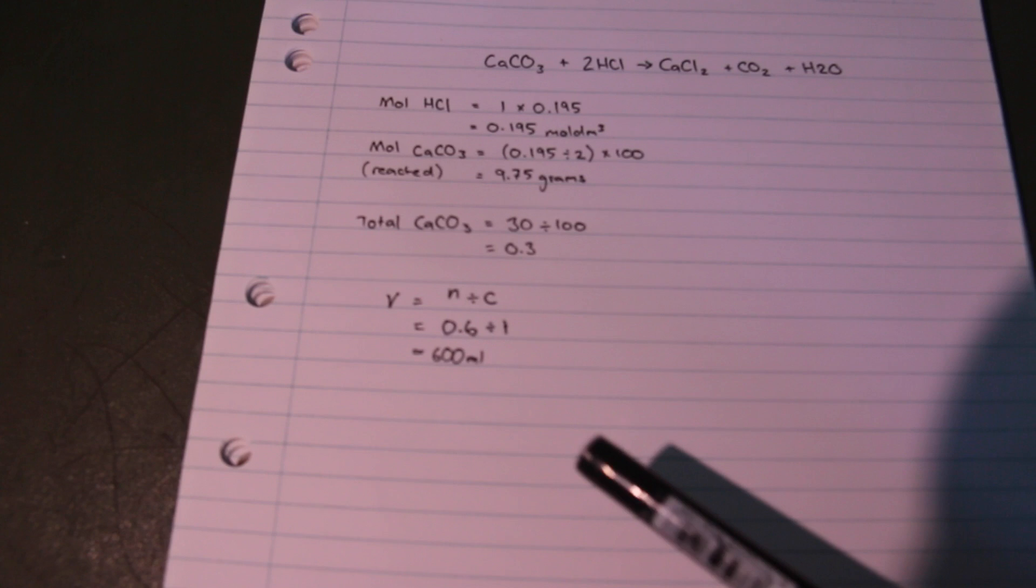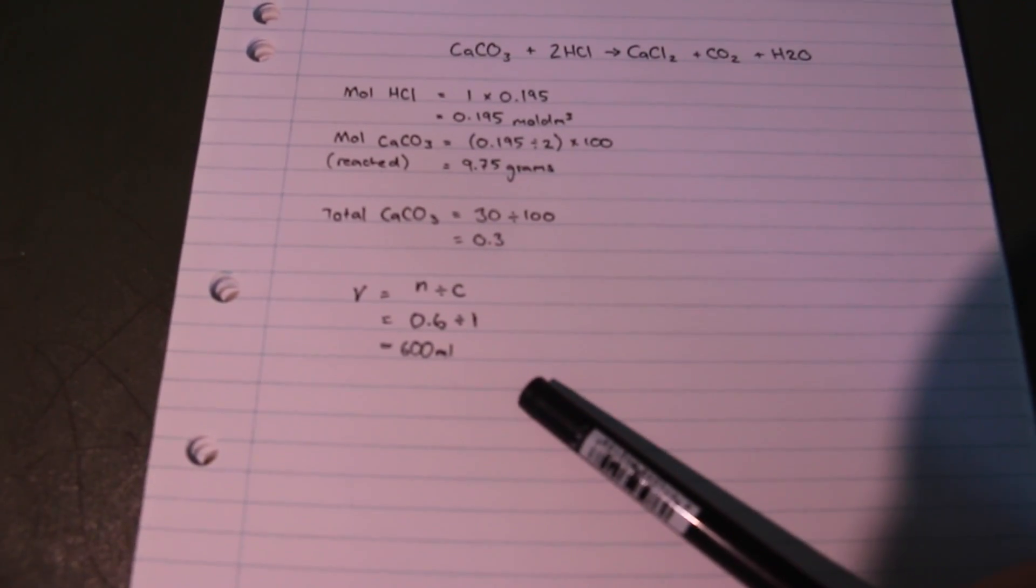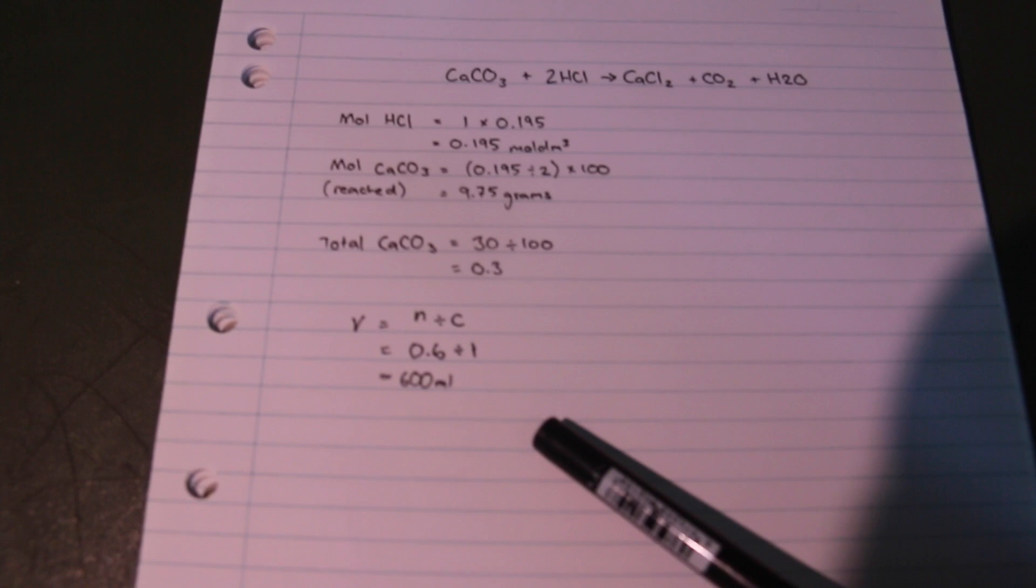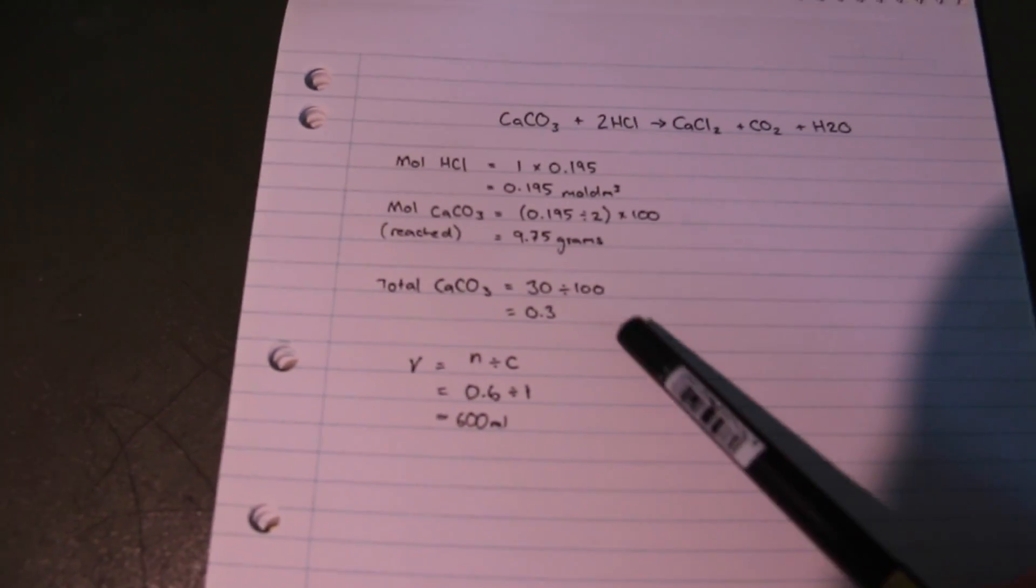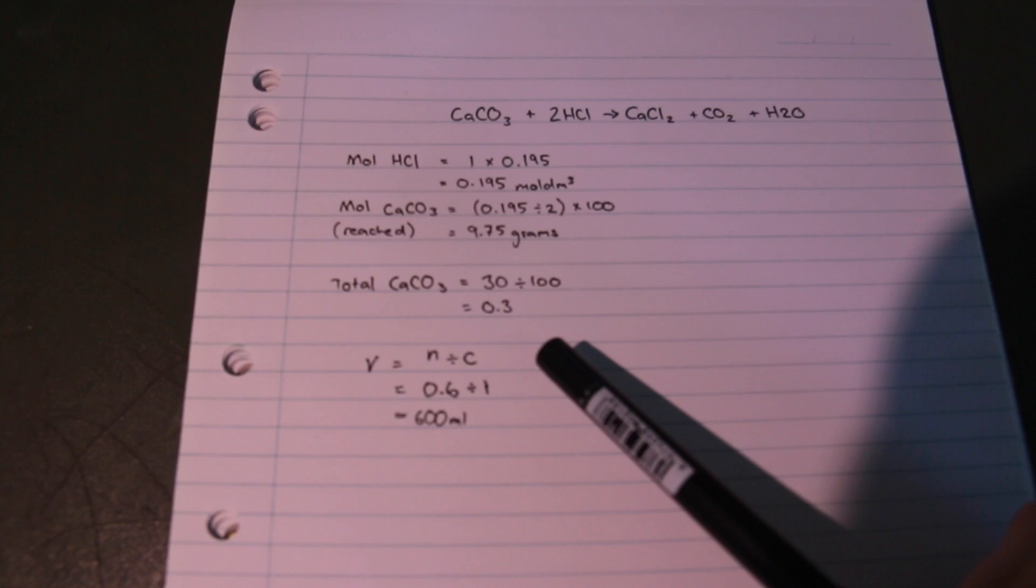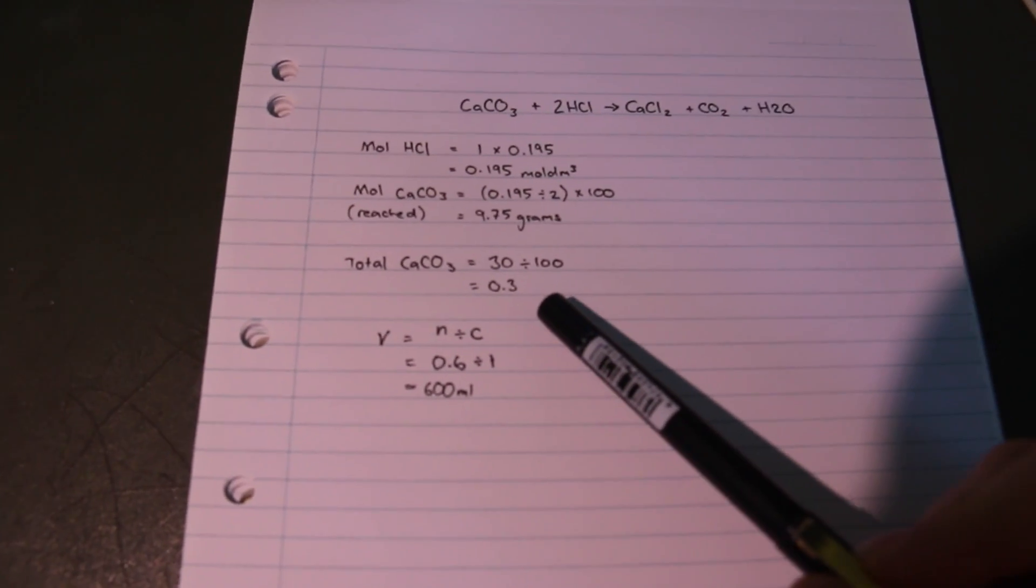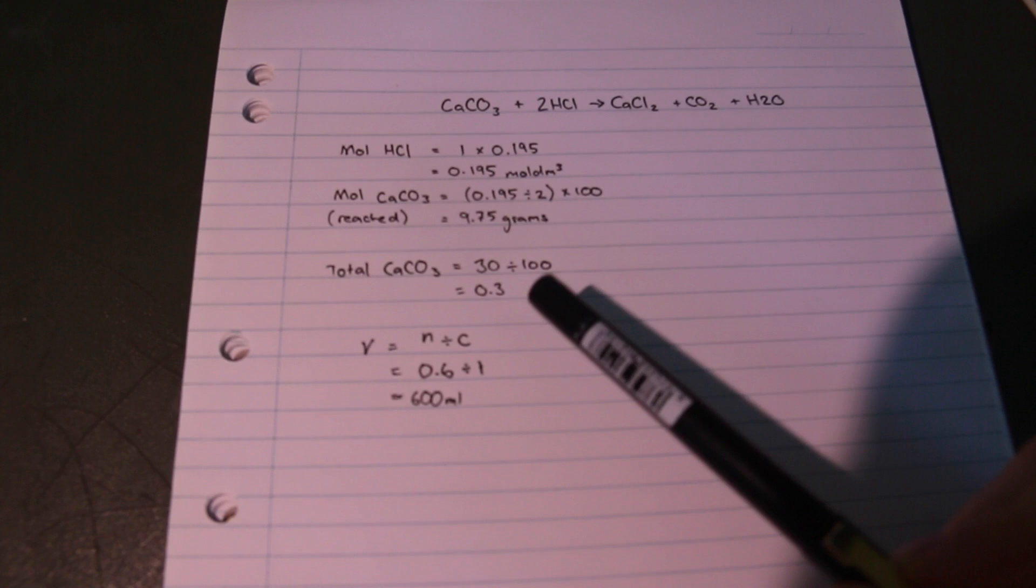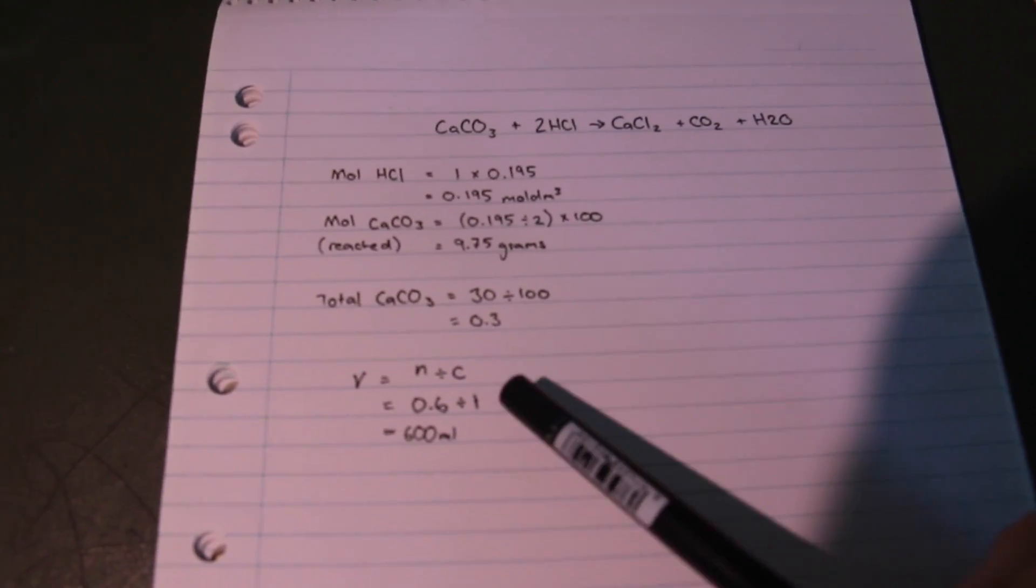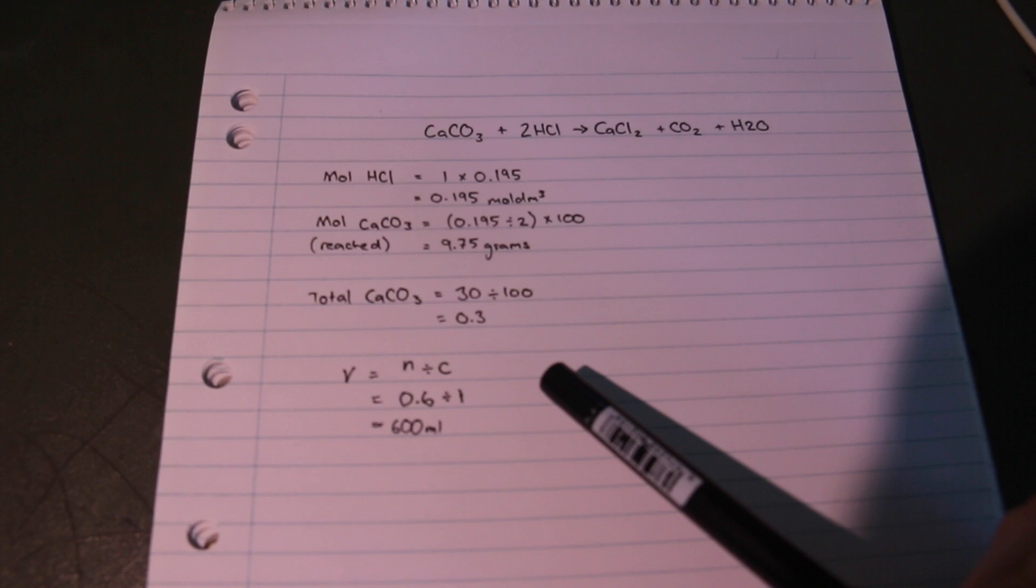Next I calculated the amount of acid required to dissolve the entire rock. So assuming the rock was 30 grams, I figured out that the number of moles of calcium carbonate in the rock, if it was pure calcium carbonate, are 0.3 moles. According to the reaction ratio of one is to two, I would then need 0.6 moles of hydrochloric acid to dissolve it.